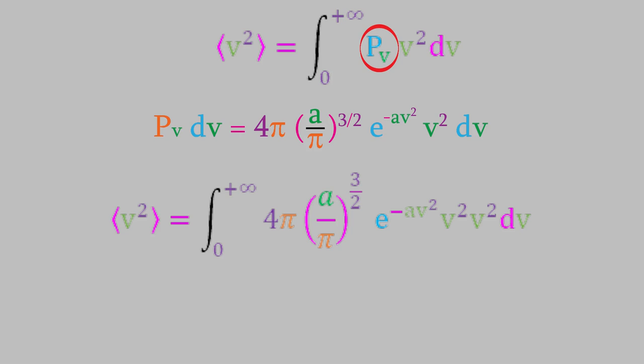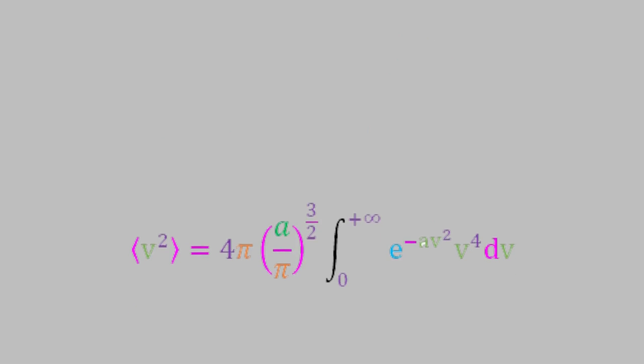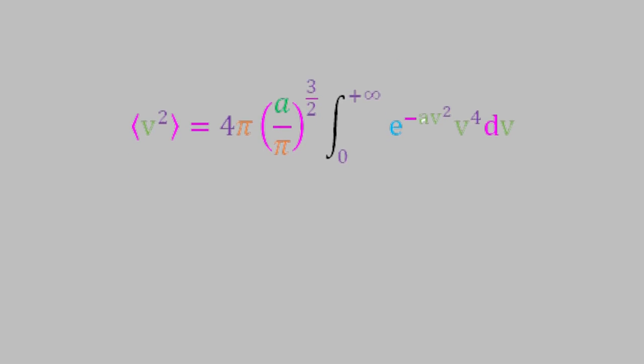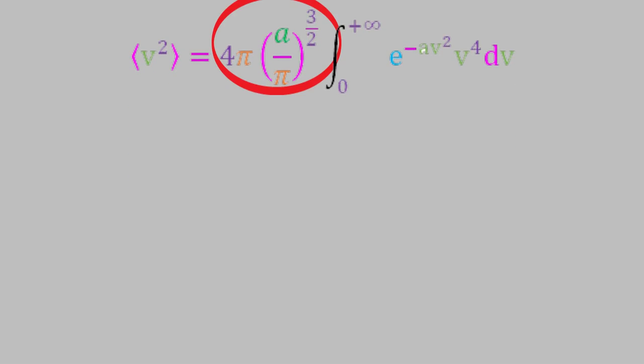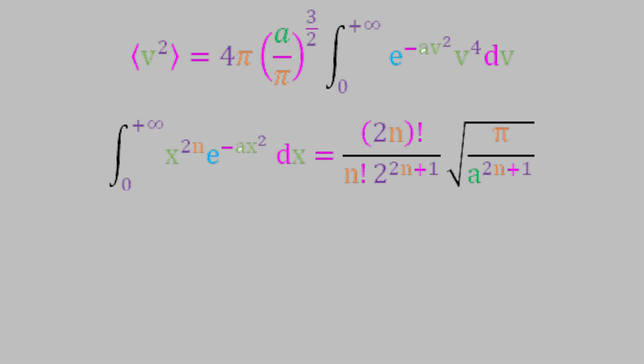Let's simplify this a bit by combining the two v squared terms. And next, let's take all the constants out of the integral. So, this equation tells us the average of the squared velocity is equal to this constant times the integral. Now we need to solve the integral. This is another definite integral whose solution is known. And if we look in a table of integrals, here's what we'll find.